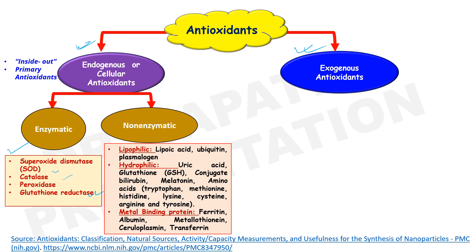Non-enzymatic endogenous antioxidants include lipophilic types such as lipoic acid, ubiquitin, and plasmalogen; and hydrophilic types such as uric acid, glutathione, conjugated bilirubin, melatonin, and amino acids including tryptophan, methionine, histidine, lysine, cysteine, arginine, and tyrosine.